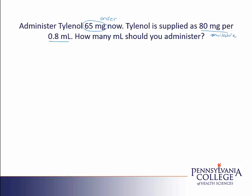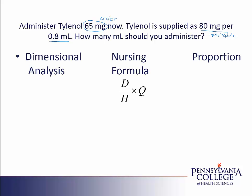I can do this problem using one of three methods. Which method you choose is up to you. I'll start with the dimensional analysis approach. In this approach, we take the 65 milligrams that is ordered and place it over one. We'll use the strength of the med to cancel the milligrams, so on the bottom of my second fraction I put the 80 milligrams, and on the top I put the 0.8 milliliters.